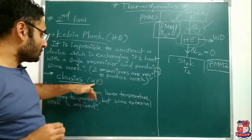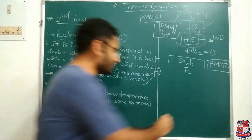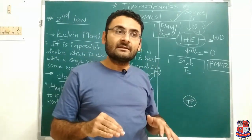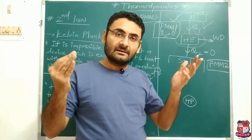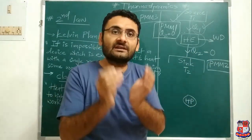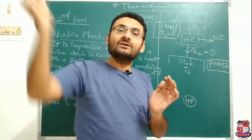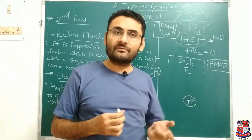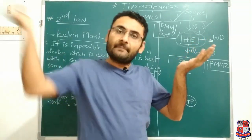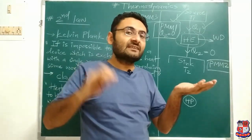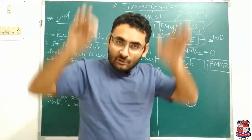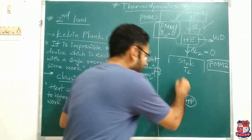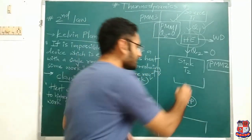Now we will proceed with the Clausius statement. Clausius considered one heat pump. A heat pump is a device which maintains a temperature higher or lower than the surrounding temperature. For example, a heater is one type of heat pump which maintains a higher temperature compared to the surroundings. A refrigerator is another type of heat pump which maintains a lower temperature compared to the surroundings. The heat pump is located between two reservoirs — a source at temperature T1 and a sink at temperature T2.